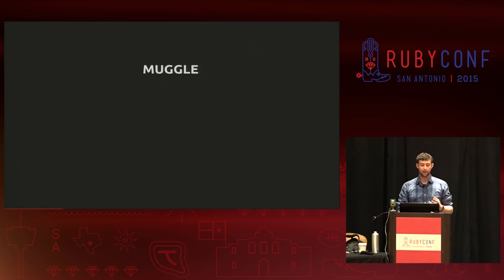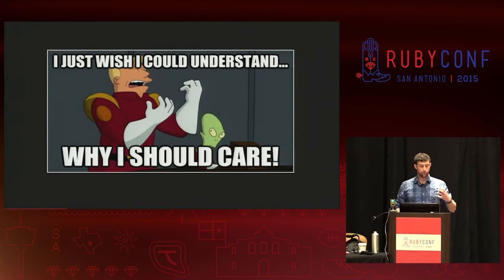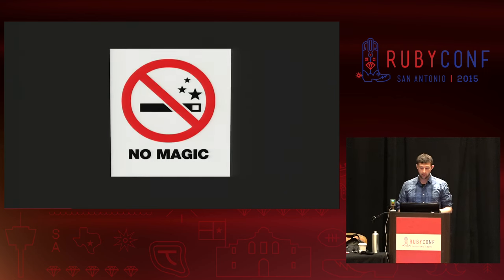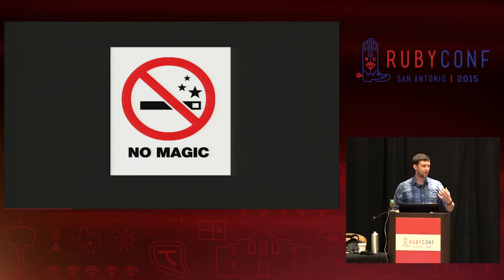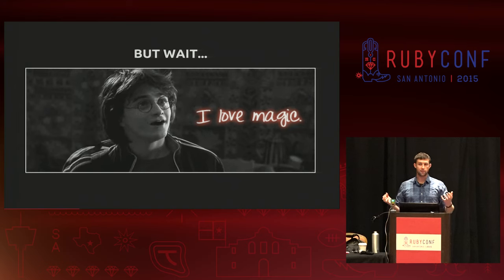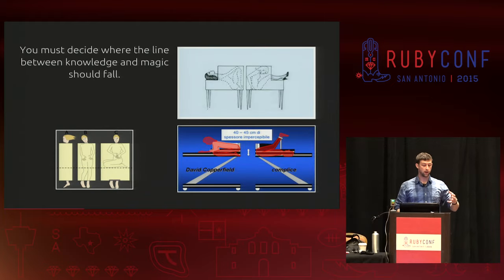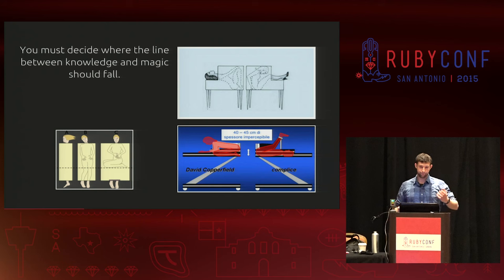What the hell is a muggle? For those who may not know, a muggle in the Harry Potter books is someone who lacks magic ability. The way I want to present this talk is without magic — by which I mean like Rails magic, doing all these magical things behind the scenes. It's going to be up to you to decide where the line between knowledge and magic should fall.